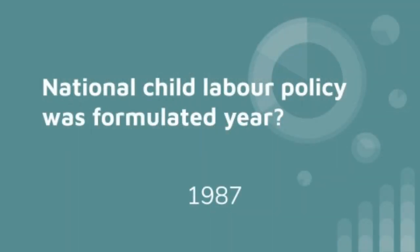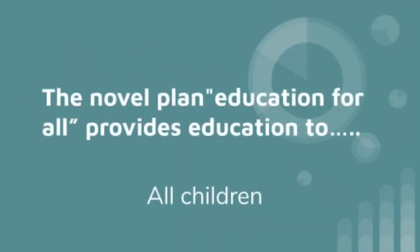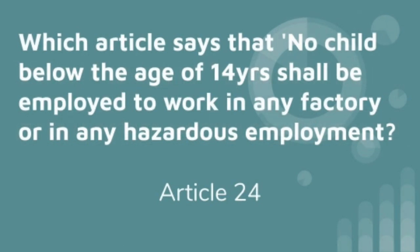The National Child Labor Policy was formulated in 1987. The novel plan Education for All provides education to all children. Article 24 says that no child below the age of 14 years shall be employed to work in any factory or in any hazardous employment.